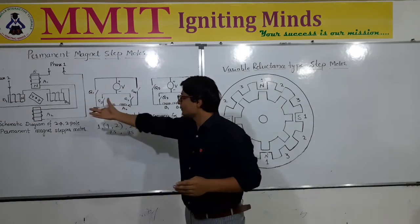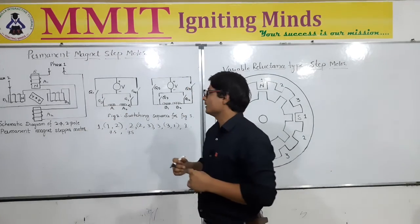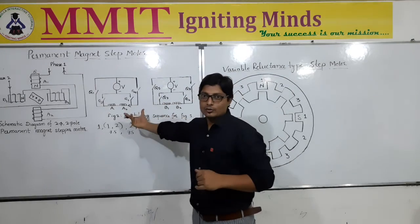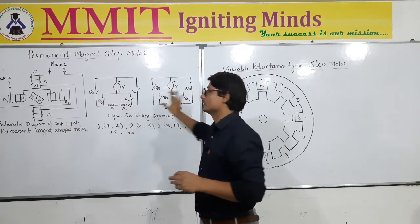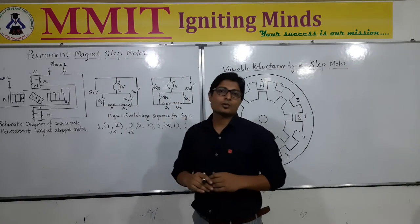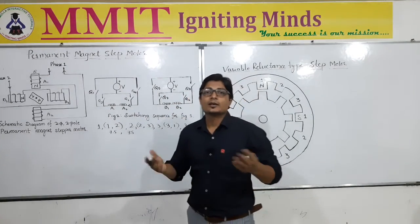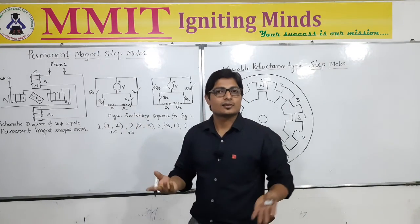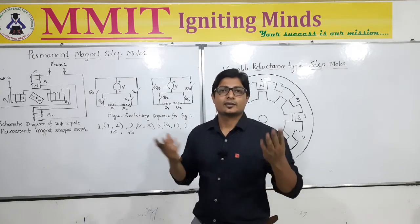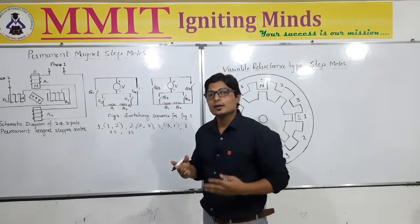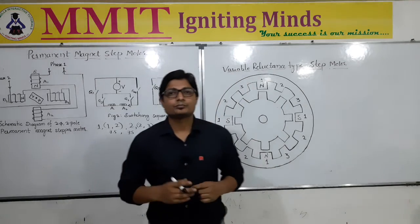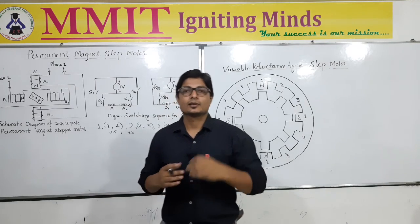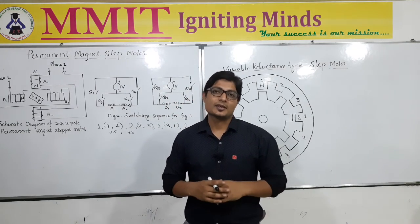Because of this current reversal requirement, the number of switches required in the permanent magnet stepper motor are too many. For example, for this two-phase two-pole permanent magnet stepper motor, almost eight switches are needed, which leads to complication in design — more transistors, biasing circuits, and tedious connections. Therefore, we now move to the next type: the variable reluctance stepper motor.